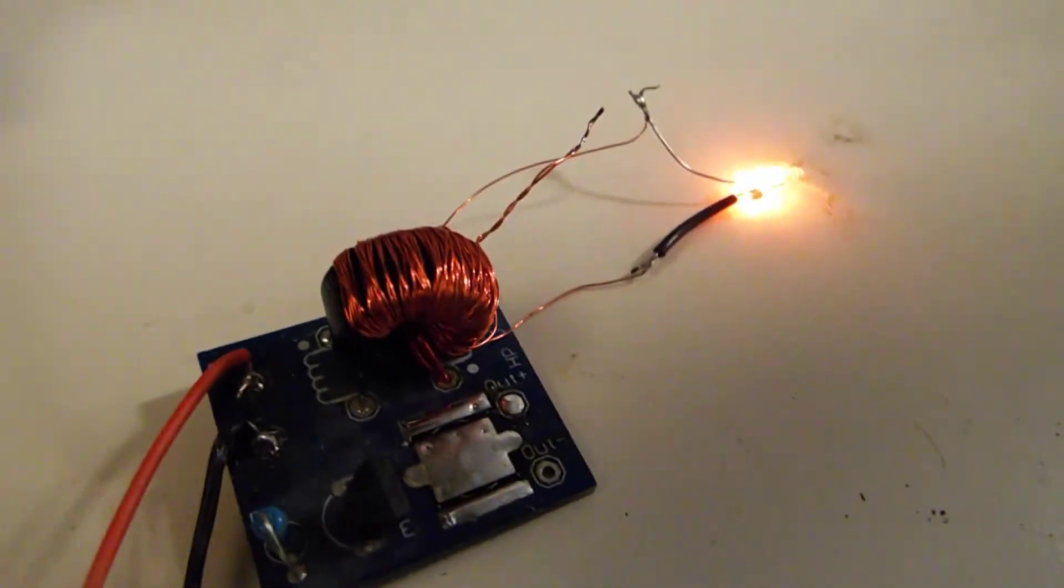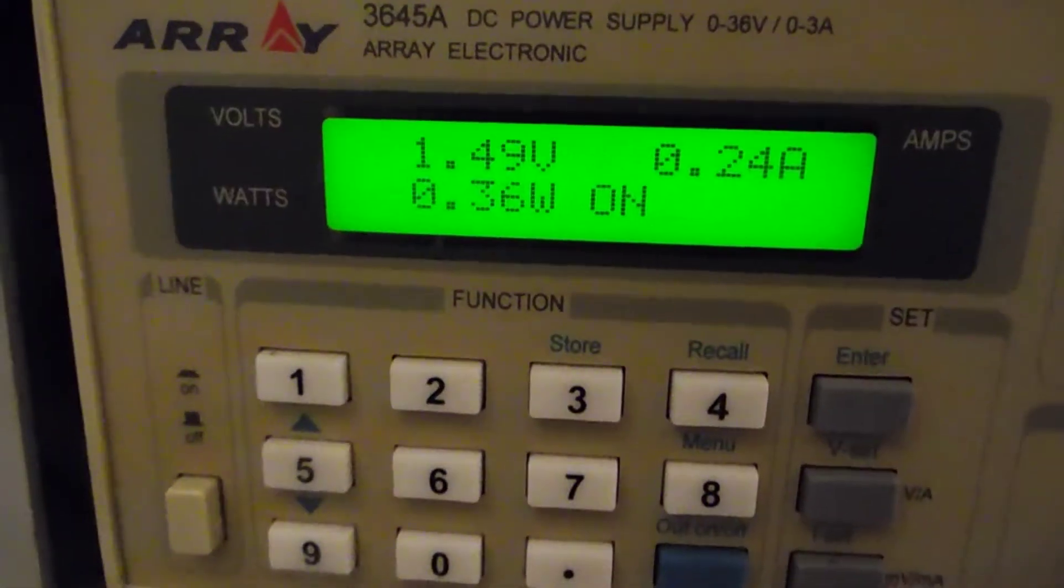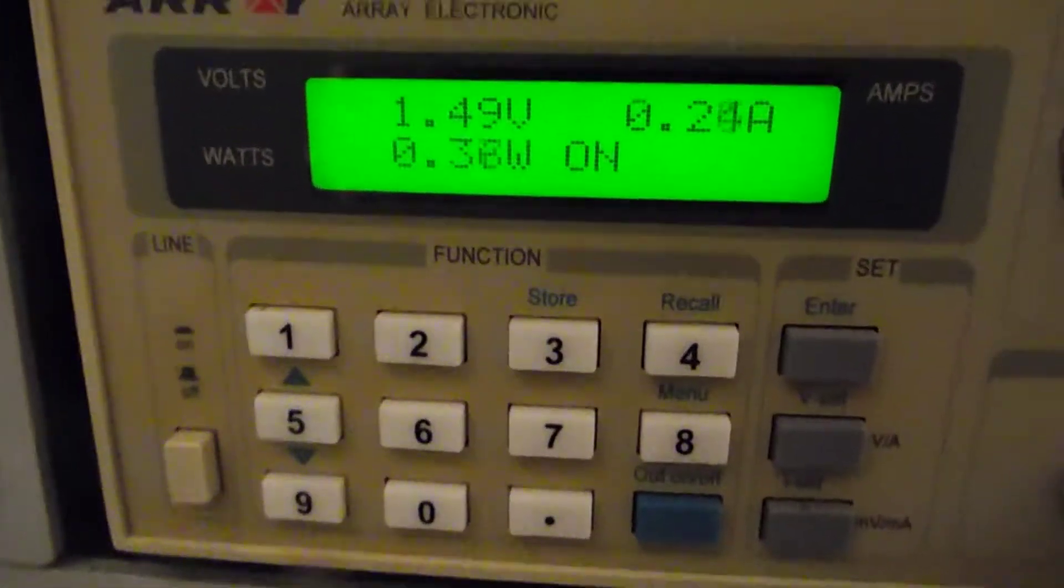So this one is a 250 volt neon bulb and it's being lit by the Joule Thief circuit. I currently have one and a half volts going into it and it's drawing about a quarter of an amp.